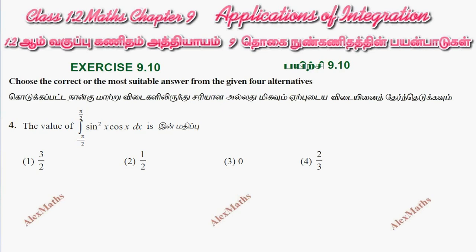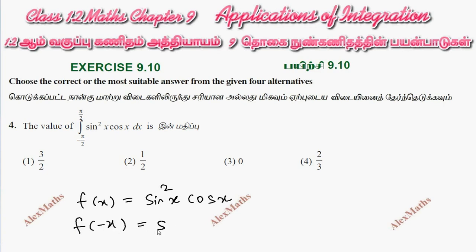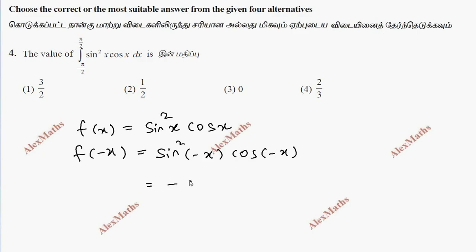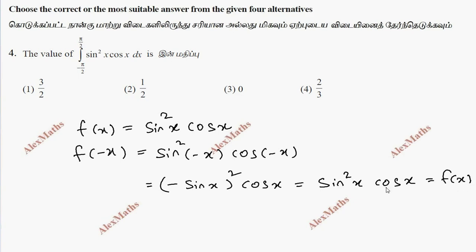If we look at the function f(x) = sin²x · cos x, then f(-x) = sin²(-x) · cos(-x). Since sin²(-x) = sin²x (whole square) and cos(-x) = cos x, we get f(-x) = sin²x · cos x = f(x). Therefore, it is an even function.